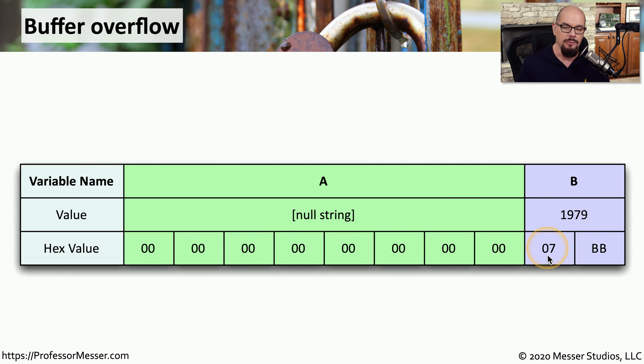We looked at that in hexadecimal, it would be the value 07BB. You can see that nothing has been set for variable A. If this application was vulnerable to a buffer overflow, we might be able to overwrite the value of variable A and have it spill over into the area that's currently used by variable B.